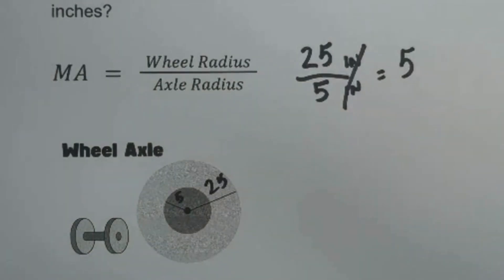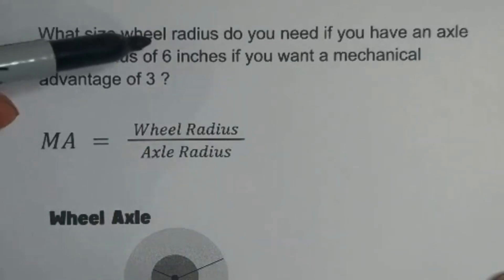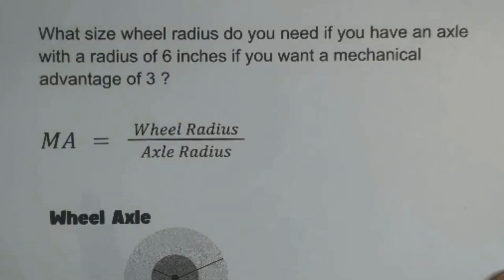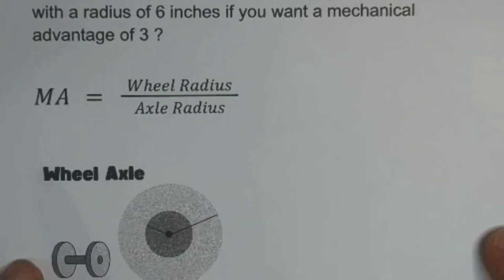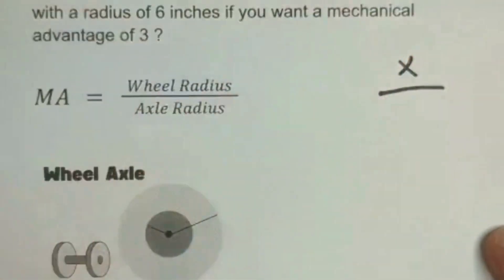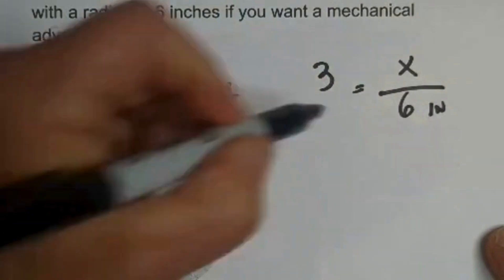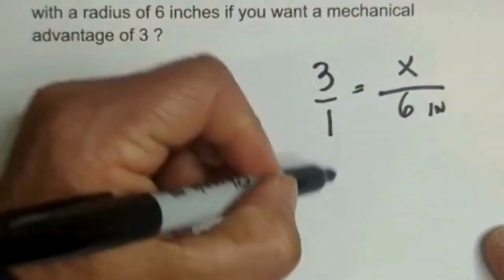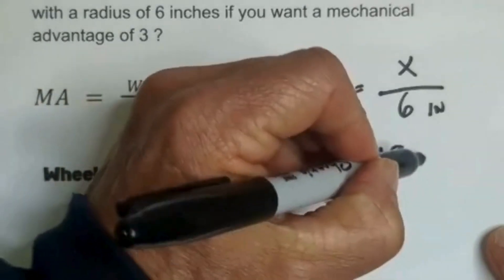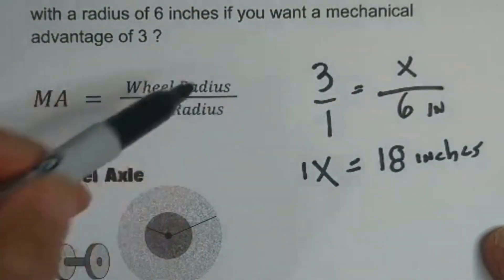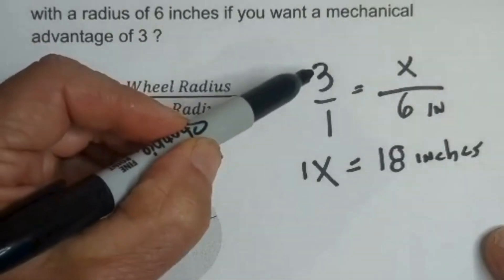Another style problem: what size wheel radius do you need if you have an axle with a radius of 6 inches and you want a mechanical advantage of 3? We have wheel radius as X, axle radius of 6 inches, and MA of 3. Placing 3 over 1 and cross-multiplying gives 1X equals 18 inches. So if you want a mechanical advantage of 3, the wheel radius needs to be 18 inches.